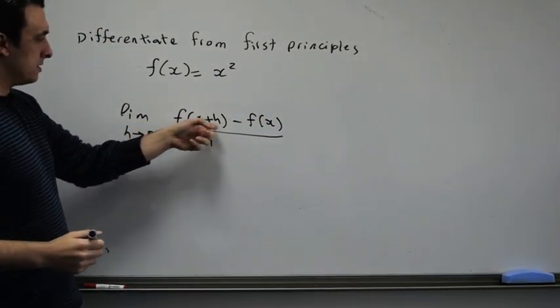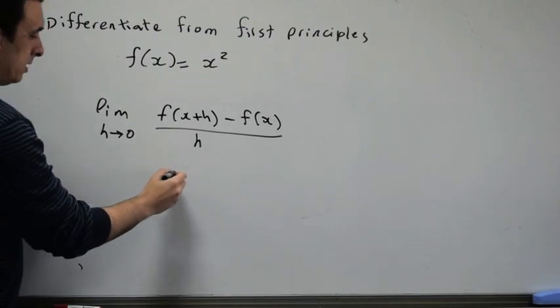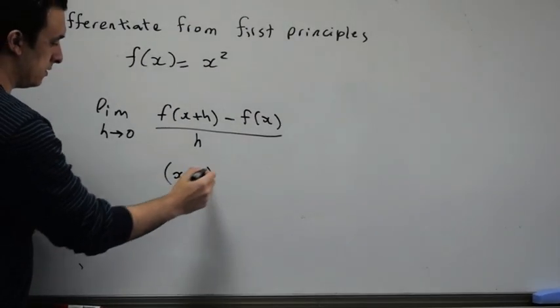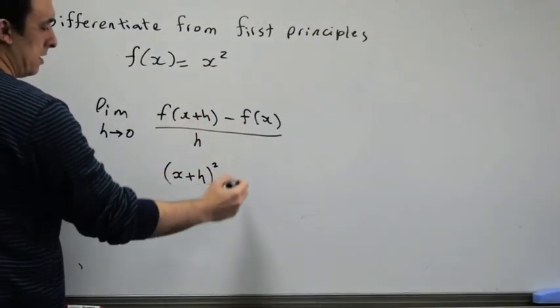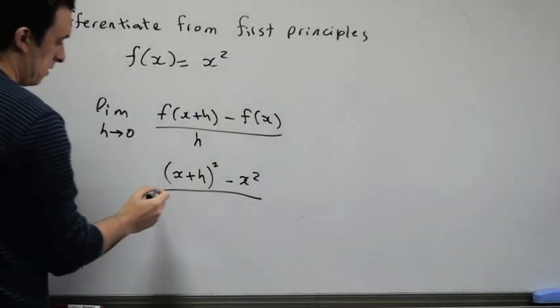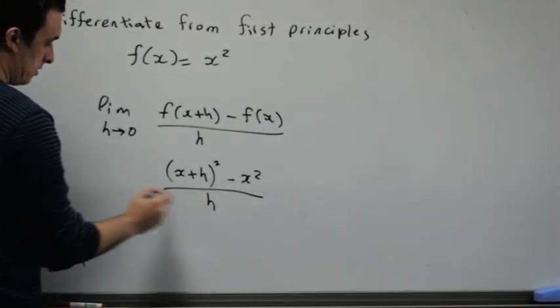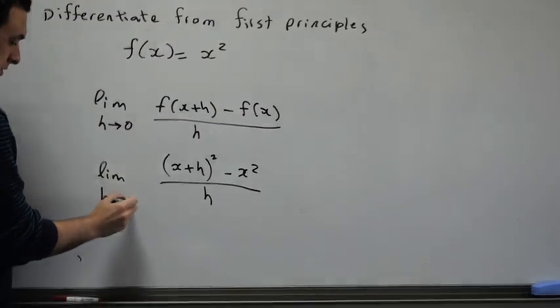So now, f(x+h) is equal to (x+h)² minus f(x) is x², divided by h. Limit as h approaches 0.